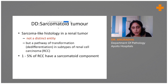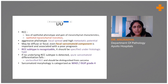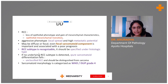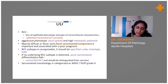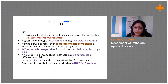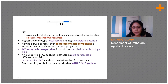The other differential is sarcomatoid tumor, which is not a distinct entity as such. In renal cell carcinoma, if there is an epithelial-to-mesenchymal transition, it falls under this category. It is a very aggressive phenotype; even a focal sarcomatoid component is associated with poor prognosis. If a carcinomatous component is identified — for example, clear cell — we label it as clear cell carcinoma with sarcomatoid component. If no particular RCC subtype is found, it is placed under unclassified renal cell carcinoma.